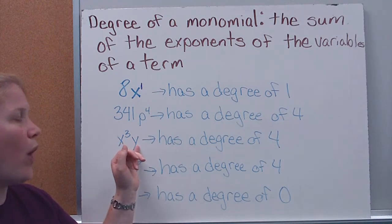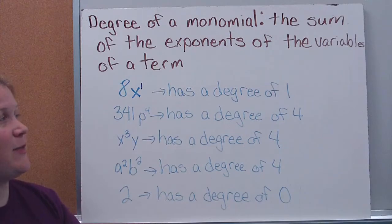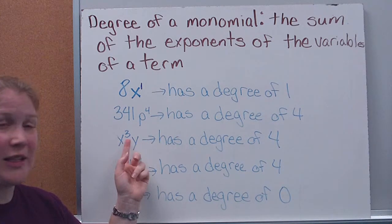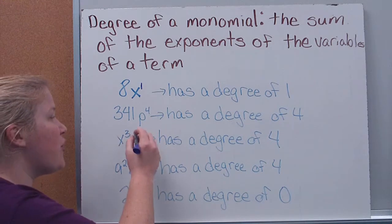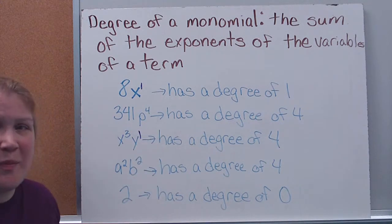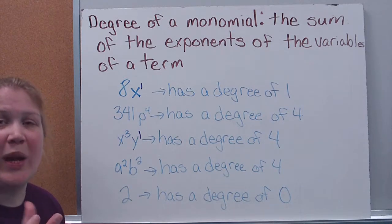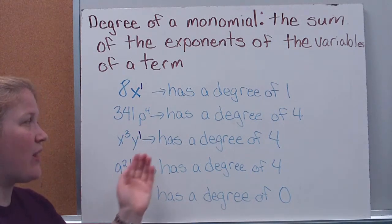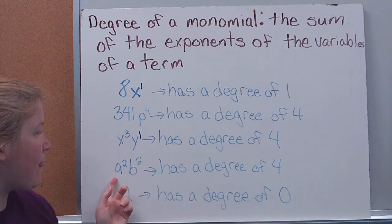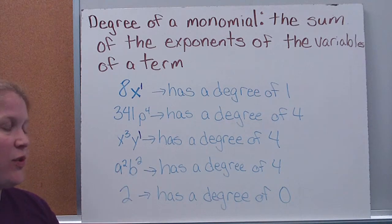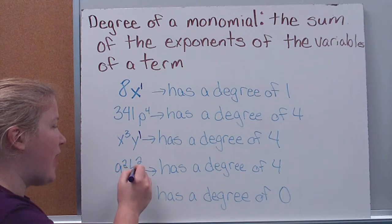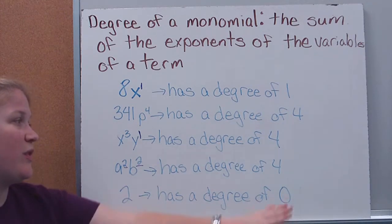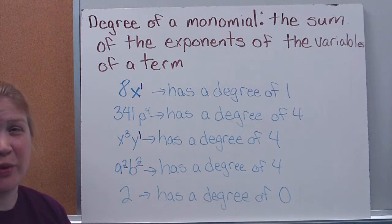x cubed y — remember, this is the sum of the exponents of all your variables. I have two variables here, so I need to add up the exponents. There's no number listed on the y, which means there's an implied 1. So I add the 3 and the 1 together — this has a degree of 4. Here I have a squared, b squared — again, taking the sum of the exponents. Two different variables: 2 plus 2 is 4. This one also has a degree of 4.